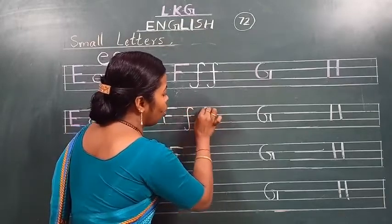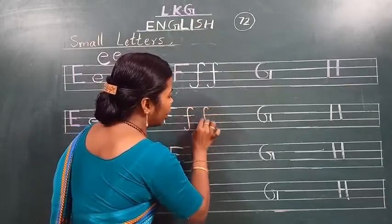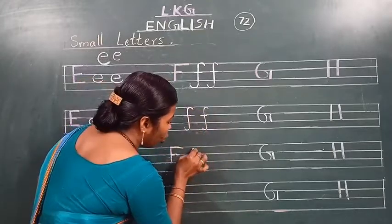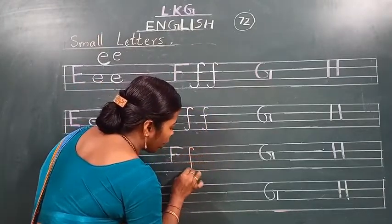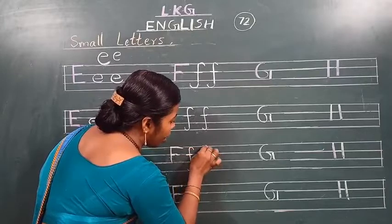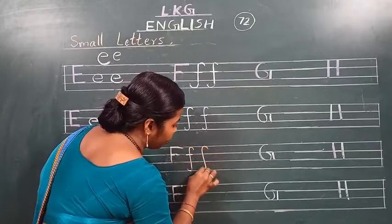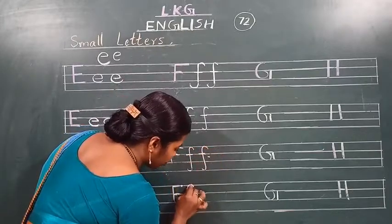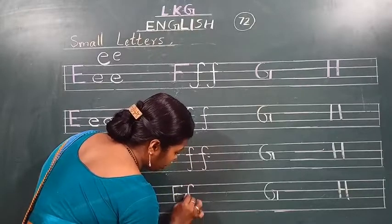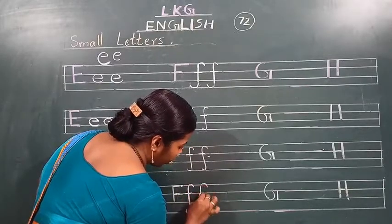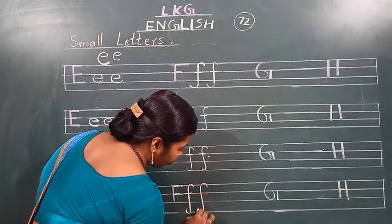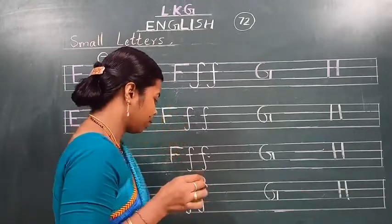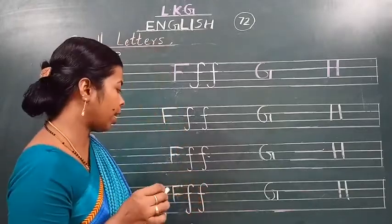Small letter F. Bol bol ke likho — small letter F. Which letter is this? This is small letter F. Okay students, samajh mein aaya hai kaisa likhna hai?